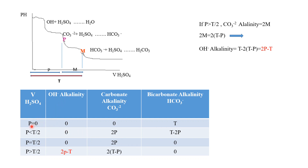In the first case, p equals t. Then we have no hydroxide and no carbonate ions, and total alkalinity is related to bicarbonate alkalinity only. In the second case, p is smaller than half of t. In this case, we have no OH alkalinity, but we have both carbonate and bicarbonate alkalinity.